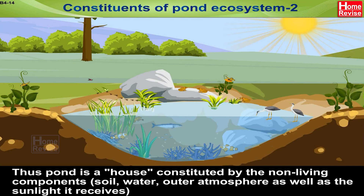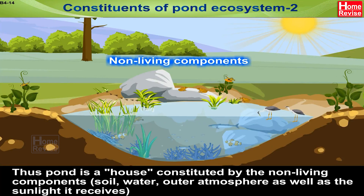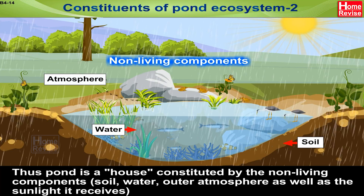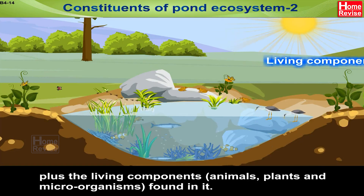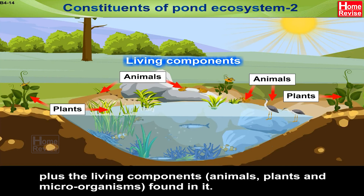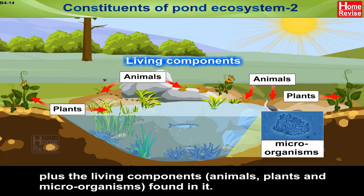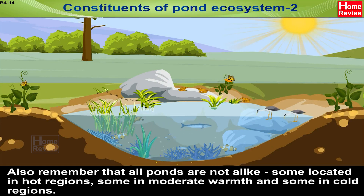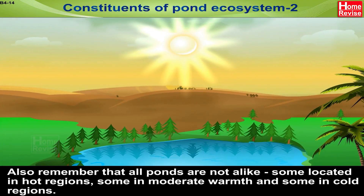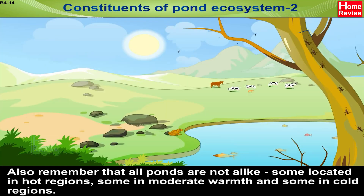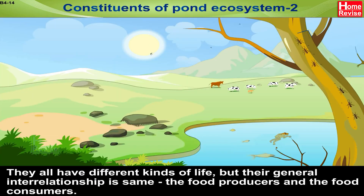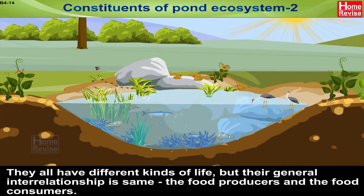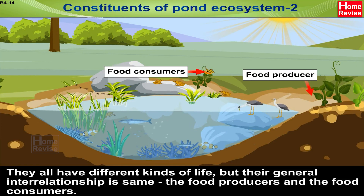Thus a pond is constituted by non-living components — soil, water, outer atmosphere, and the sunlight it receives — plus the living components, which are animals, plants, and microorganisms found in it. All ponds are not alike; some are located in hot regions, some in moderate warmth, and some in cold regions. They all have different kinds of life, but their general interrelationship is the same: food producers and food consumers.